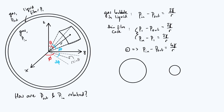The fact that the pressure difference depends on 1/r leads to a result that I found counterintuitive at first: if you have two bubbles of different sizes connected by a thin tube, instead of equalizing in size, the larger bubble will consume the smaller one. The pressure in the smaller bubble is larger because it has a smaller radius, so gas flows from the small bubble to the large bubble, making the large bubble grow.